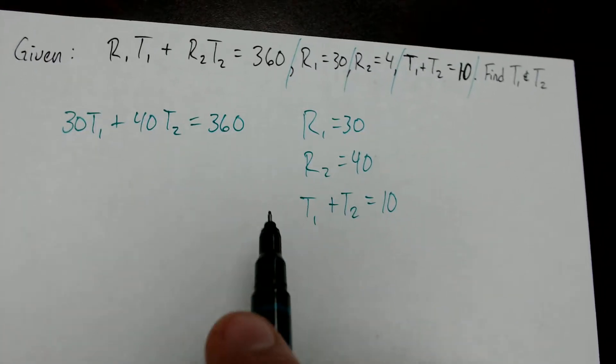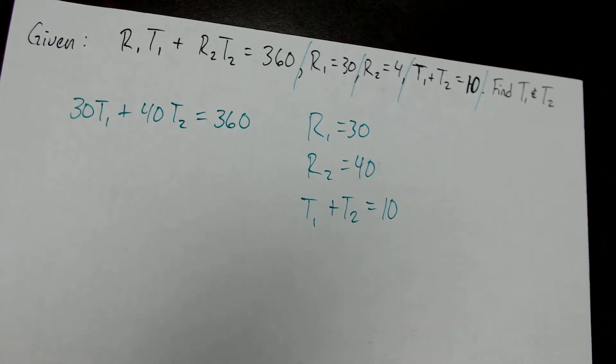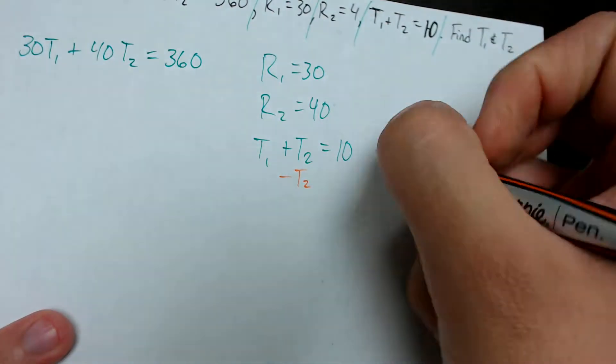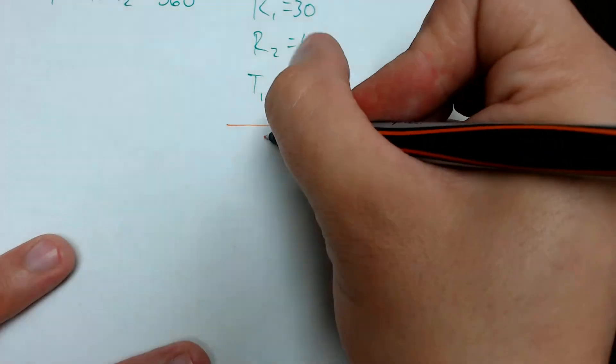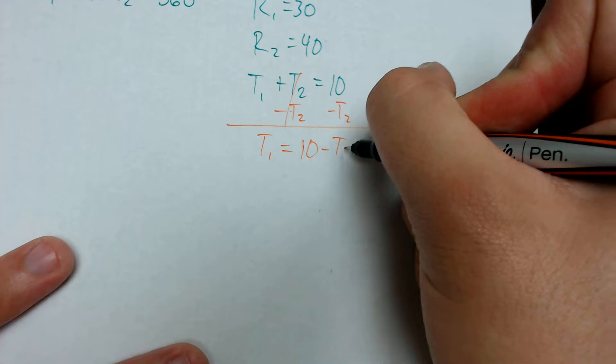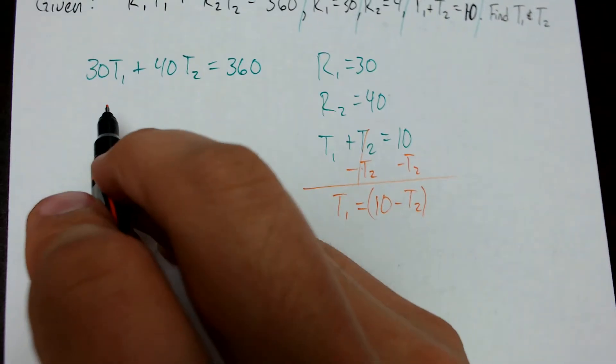Now, in order to solve for T1 and T2, I have to solve this equation for one of them so I can substitute that. If I subtract T2 from each side, this equation then becomes T1 equals 10 minus T2. I can take this value and substitute it for T1 in this equation.